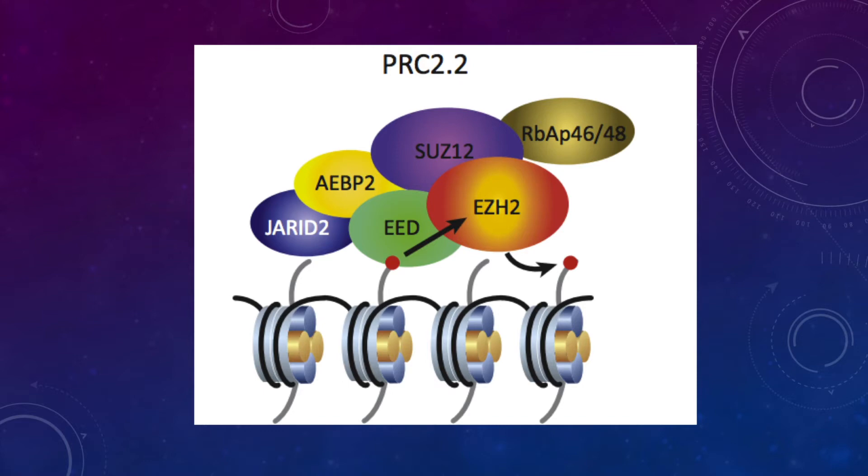PRC2 has three core subunits: EZH2, SUZ2, and EED, with cofactors JARID2, AEBP2, and RBAP46. Some publications cite RBAP46 as a fourth core subunit.